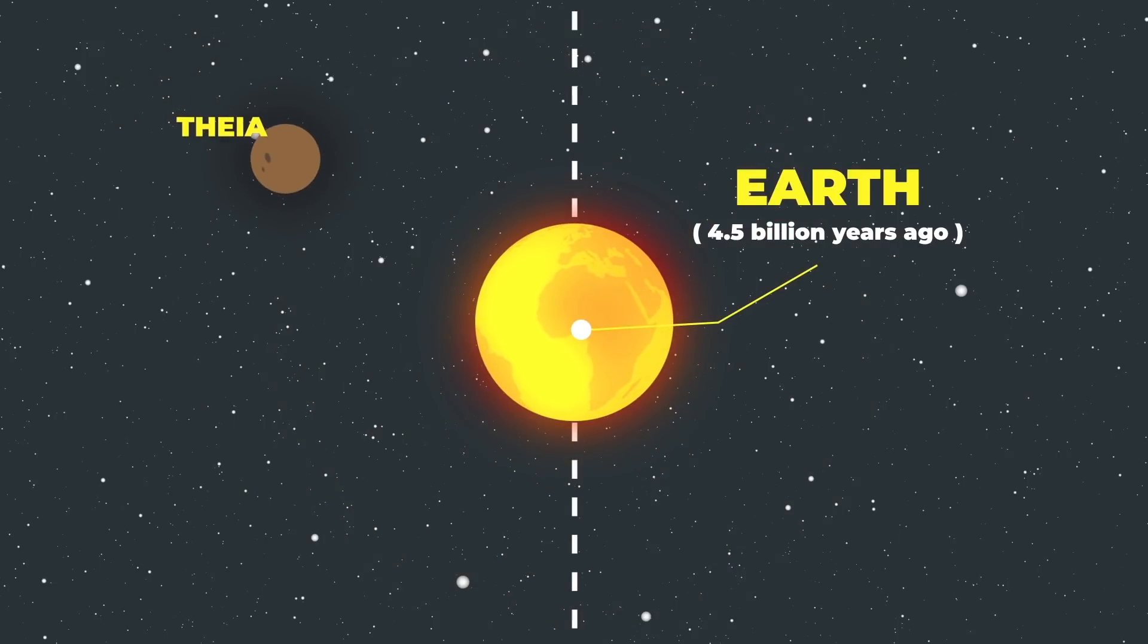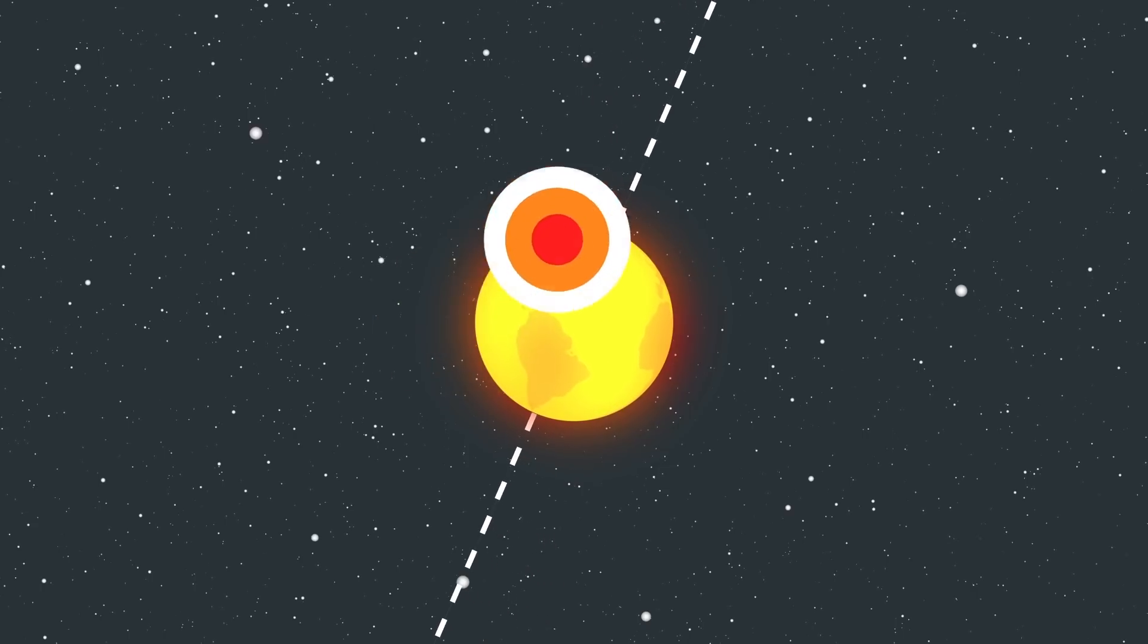You see that Mars-sized planetoid called Thea. Well that thing crashed into the earth 4.54 billion years ago creating a huge impact. And the residual rock and dust particles that were created by the impact just orbited around the earth for years.